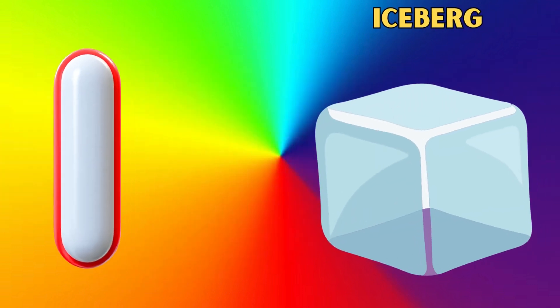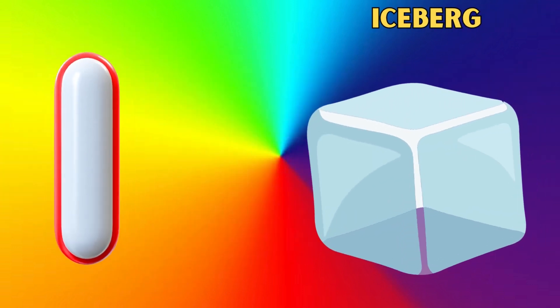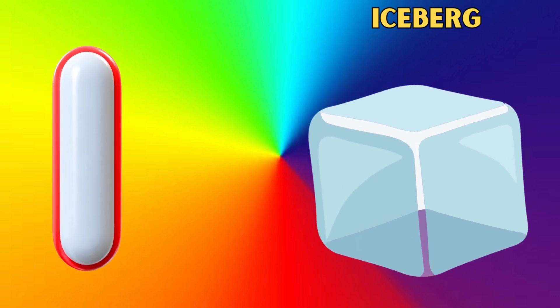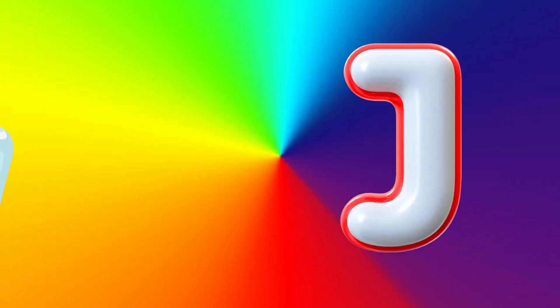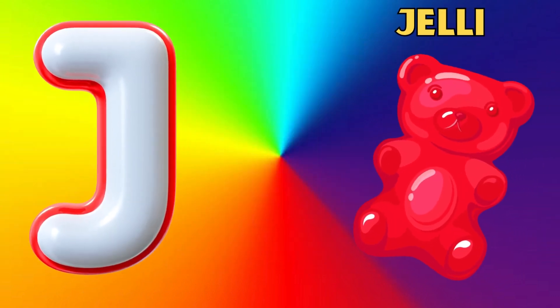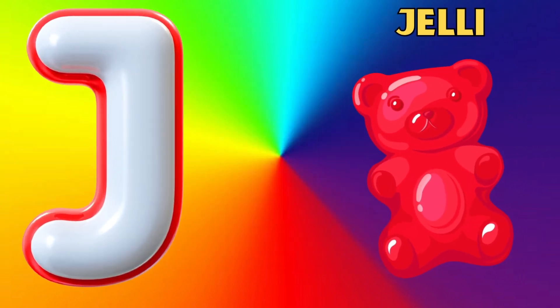I is for iceberg, iceberg. J is for jelly, jelly.